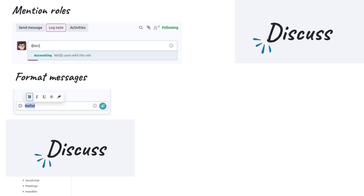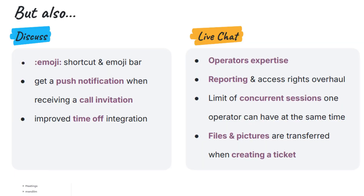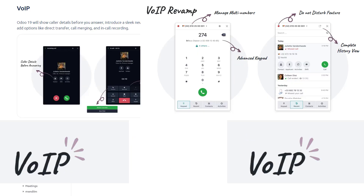Emoji shortcuts and reactions are also improved to make conversations more expressive. When someone invites you to a voice or video call via the VOIP feature, you will get a push notification so you don't miss it. The Discuss app also links with the time off module to auto-update your status when you are on leave.